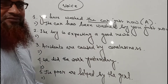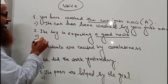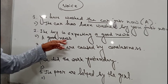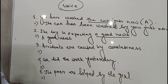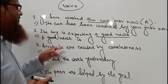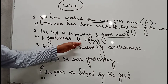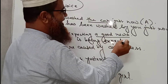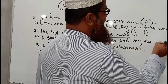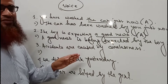Number two: 'The boy is expecting a good news.' The object is 'a good news', which becomes the subject. Note that 'news' is a singular word, so we use 'is'. As there is '-ing' with the verb, we use 'being'. The passive form is: 'A good news is being expected by the boy.' Very easy to understand if you pay attention and watch the videos closely.